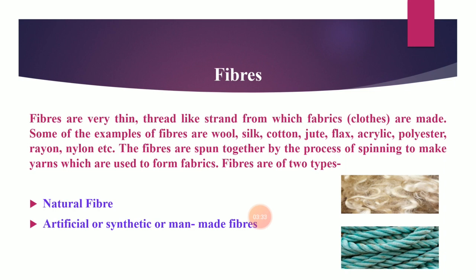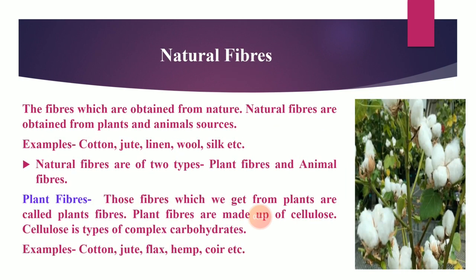Fibers are basically of two types: natural fibers and synthetic fibers. Synthetic fibers are also called artificial or man-made fibers, because they are made by human beings. Natural fibers are the fibers we obtain from nature — from plants and animals. Natural fibers are also of two types: plant fibers and animal fibers.